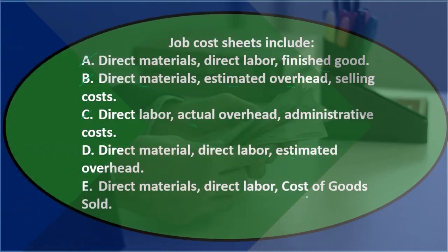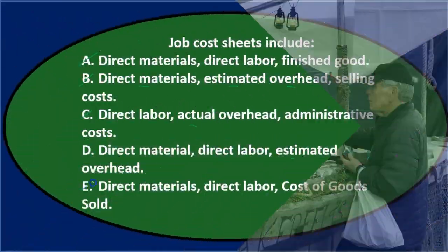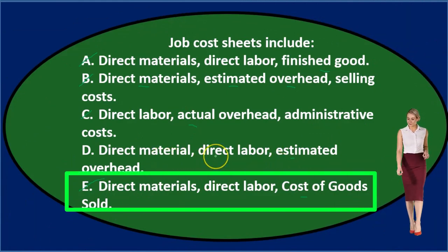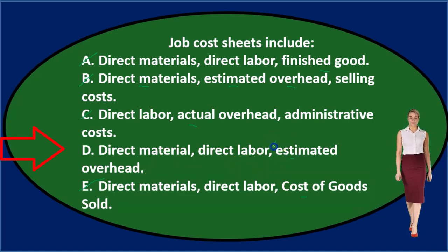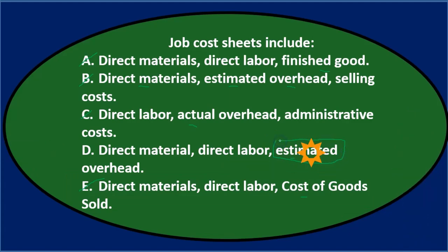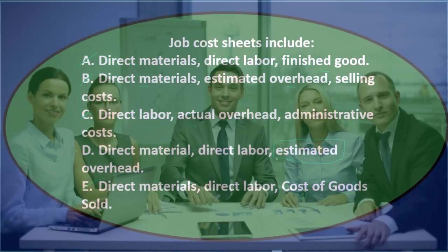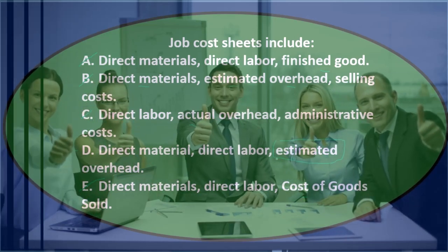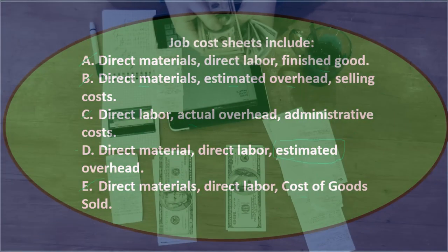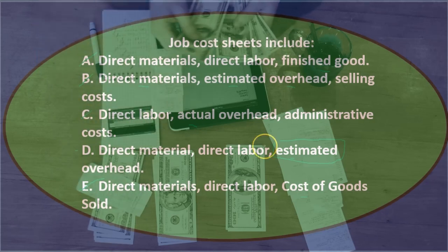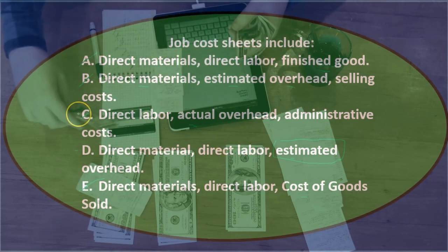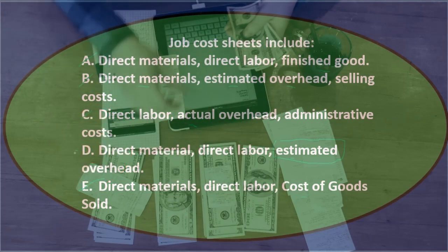We use the job cost sheet to determine cost of goods sold once it is sold. So the answer is D. Just recognize that it would be estimated overhead we're looking for — when we applied to the job cost sheet, we didn't know what actual overhead was, so we used an estimate. That's the point of overhead: we don't know what the actual cost should be applied to the job, which is why we have to use an estimate. Final answer: job cost sheets include D — direct materials, direct labor, and estimated overhead.